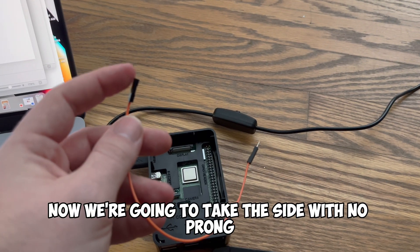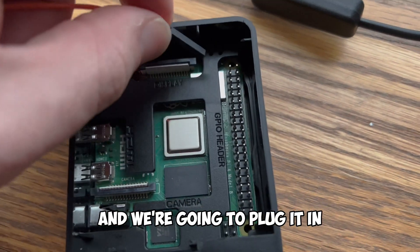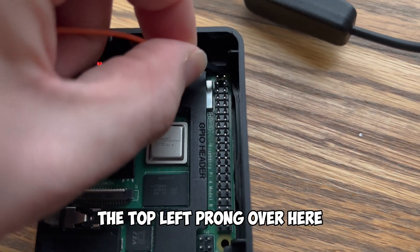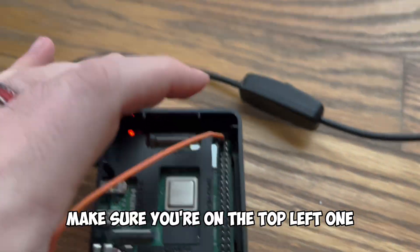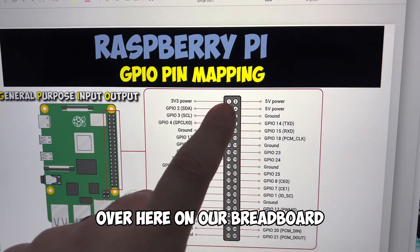Now we're going to take the side with no prong on one of our cords and we're going to plug it in the top left prong over here and this is going to be 3.3 volts of power. Make sure you're on the top left one that matches with the map over here.